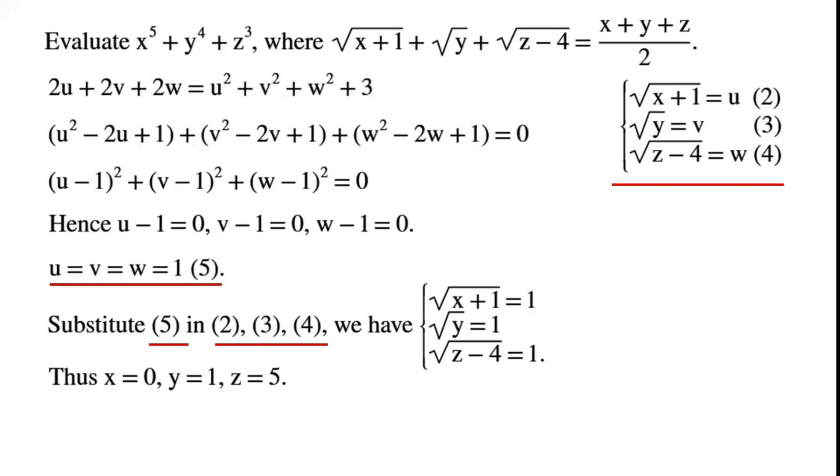x equals 0, y equals 1, z equals 5. Hence x to the power of 5 plus y to the power of 4 plus z cubed can be simplified to 126.